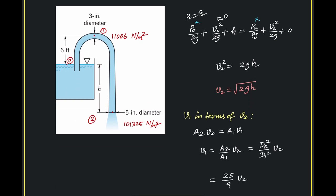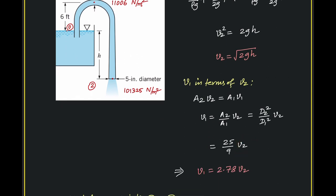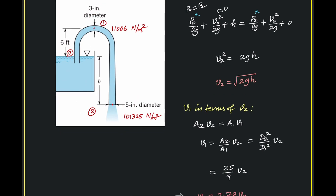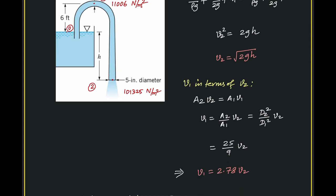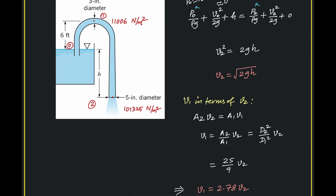Now we need the velocity at point 1. Velocities at points 1 and 2 are related by the volumetric flow equality: A₂V₂ = A₁V₁. This gives V₁ = (A₂/A₁)V₂ = (d₂²/d₁²)V₂. The diameters are in inches and we only need the ratio. So V₁ is available in terms of V₂, and V₂ is already available in terms of H. Thus V₁ is also expressed in terms of H.